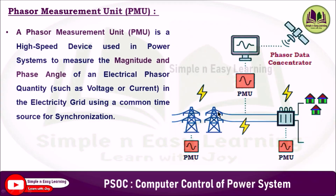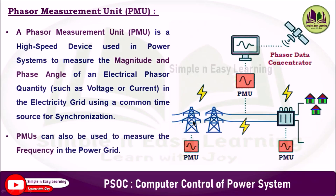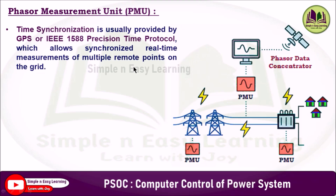The phasor measurement unit is a high-speed device used in power systems to measure the magnitude and phase angle of electrical phasor quantities such as voltage and current in a power grid, using a common time source for synchronization. Phasor measurement units can also be used to measure the frequency in the power grid. Time synchronization is usually provided by GPS — global positioning system — or IEEE 1588 Precision Time Protocol, referred to as PTP.